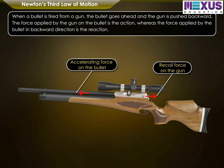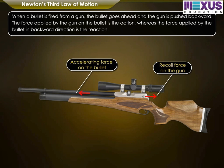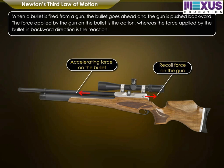When a bullet is fired from a gun, the bullet goes ahead and the gun is pushed backward. The force applied by the gun on the bullet is the action, whereas the force applied by the bullet in the backward direction is the reaction.